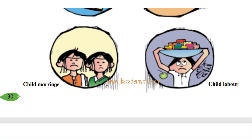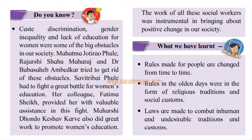Child labour is also very wrong. Children working in homes, factories, construction sites, shops, on the roadside, or anywhere — they are not supposed to work at all. Child labour should not be allowed. Do you know caste discrimination? Discrimination means showing difference based on which caste you belong to — high caste or low caste.